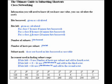For a Class B license, which is in the network, network, host, host format, you will have the last two octets to play with, so the bits left are 16 minus the bits borrowed.